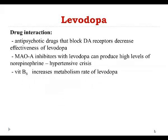Interactions: antipsychotic drugs decrease the effectiveness of levodopa because they block dopamine receptors. MAO inhibitors used for treatment of depression, when combined with levodopa, increase levels of norepinephrine and as a result patients might develop a hypertensive crisis. Vitamin B6 decreases the effectiveness of levodopa because it increases the rate of metabolism of levodopa in the patient's system.